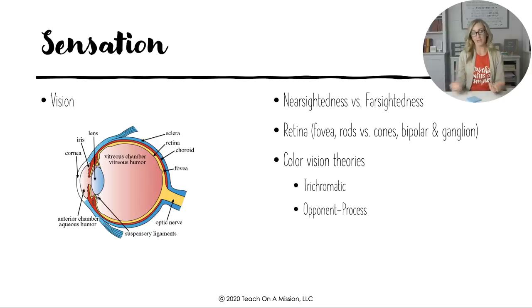The optic nerve, where it leaves the eye, there are no sensory receptors there. There's no rods and cones. So we actually have a blind spot in each of our eyes, but we don't see them because we have two eyes and they can make up for the blind spots.